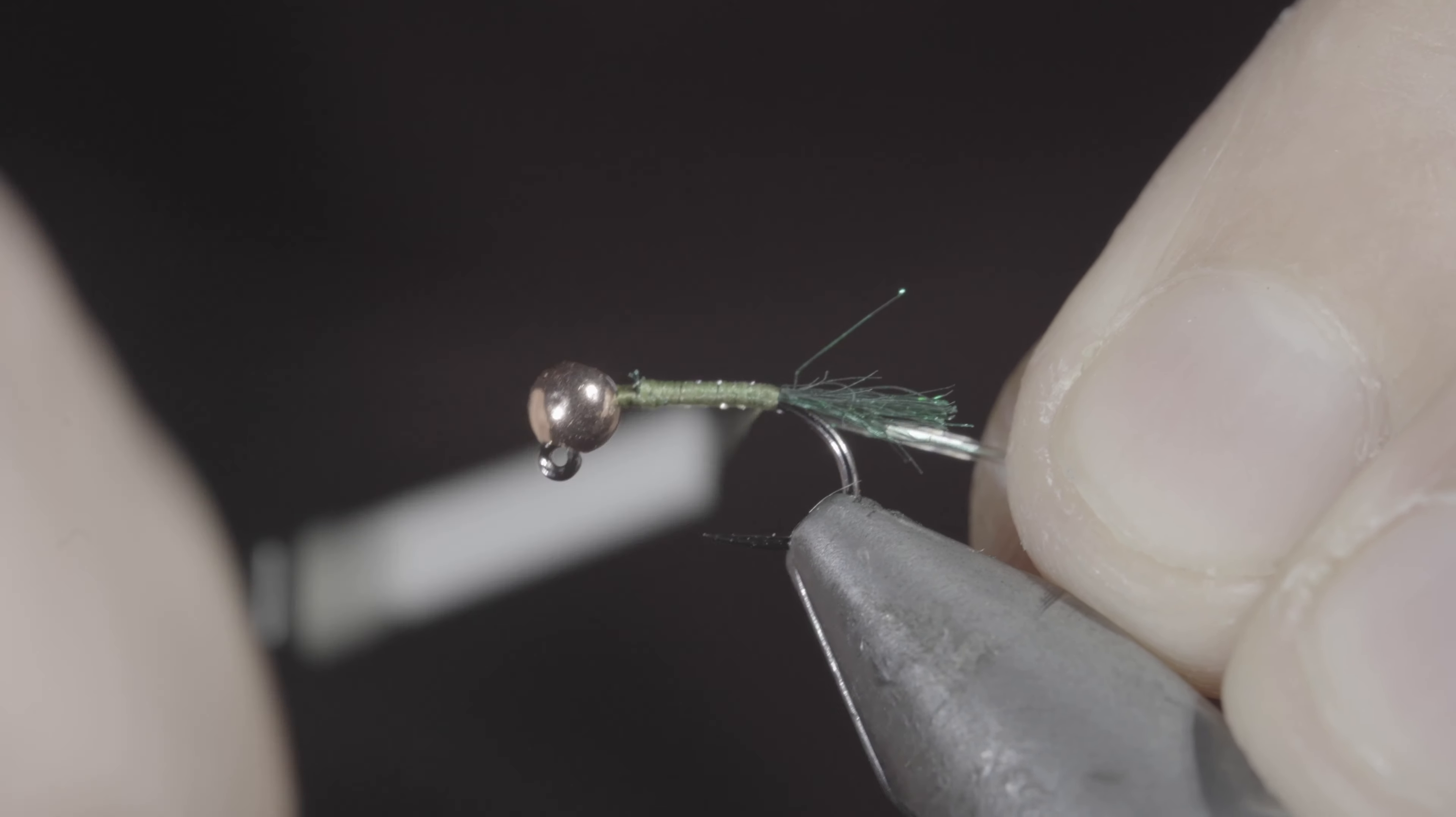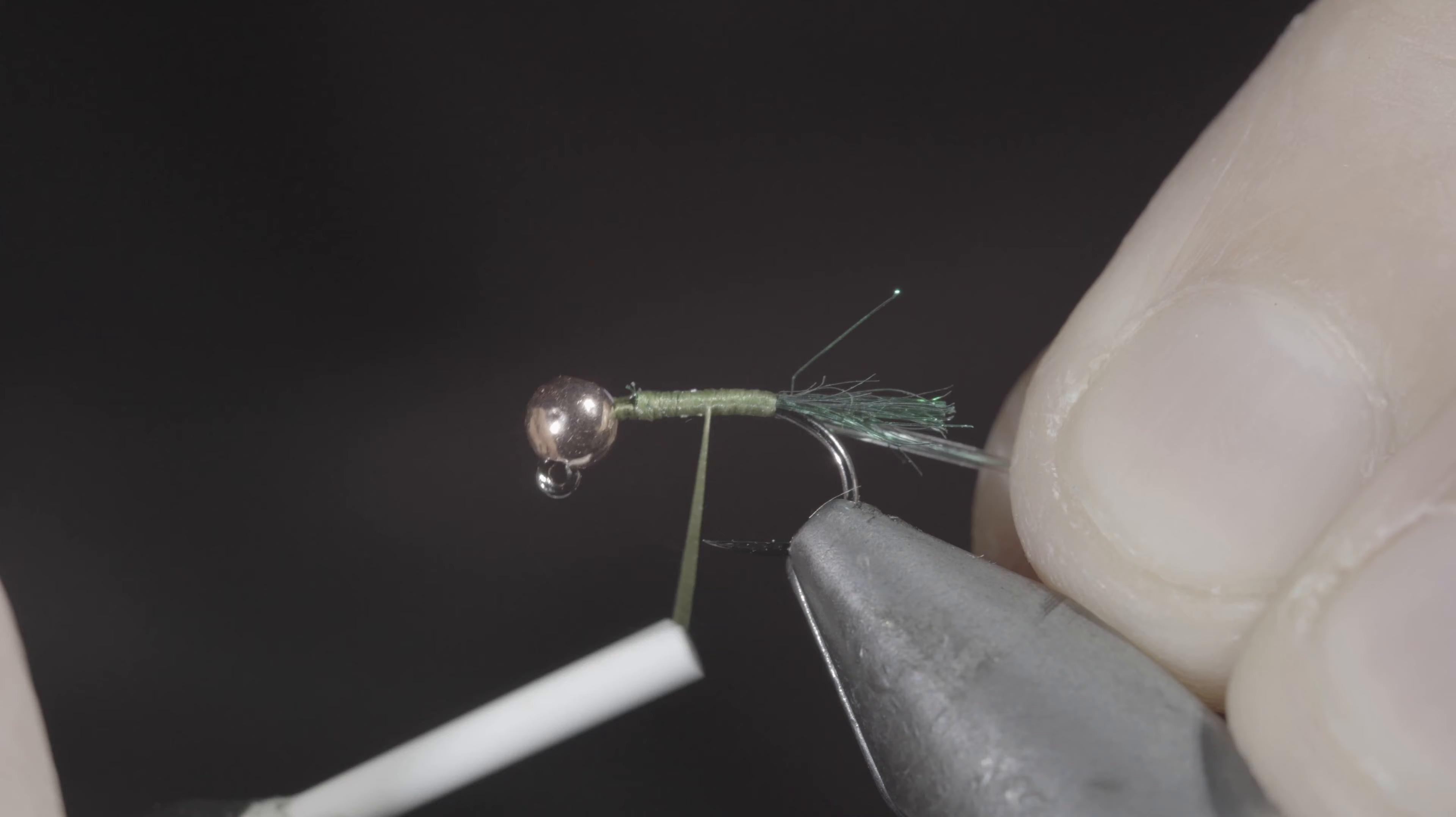At which point, we'll reverse our thread's direction and create a smooth body, wrapping towards the head of the fly.